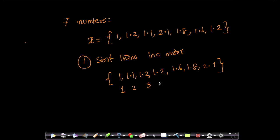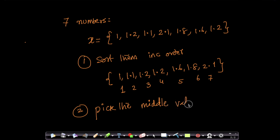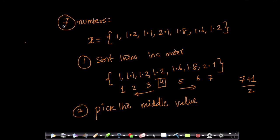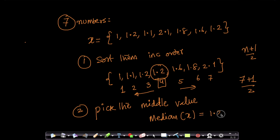These are my first through seventh numbers after sorting. The second step is to pick the middle value. For seven values, the middle is the fourth, because there are three numbers to the left and three to the right. Since seven is odd, I compute (n+1)/2 = (7+1)/2 = 4, giving me index 4. The fourth value is 1.2, so the median of x is 1.2. Very simple: sort the numbers and pick the middle value.